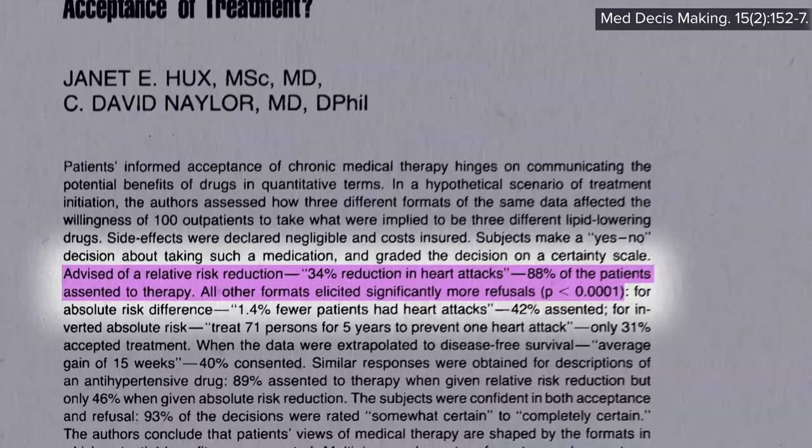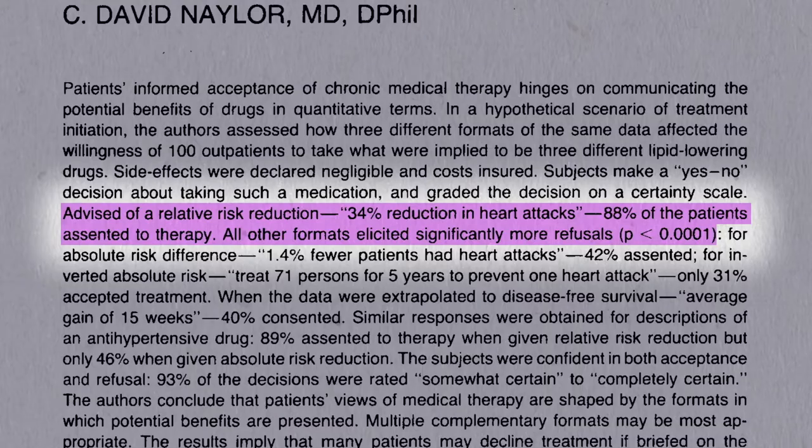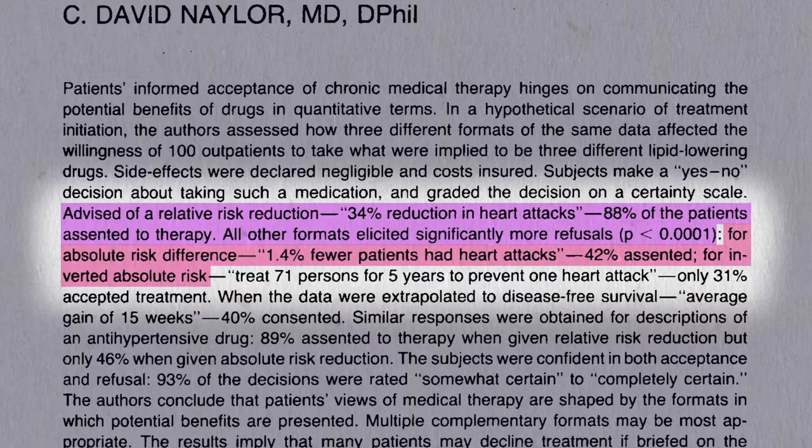If doctors inform patients only about their relative risk reduction — for example, telling patients a pill will cut the risk of heart attacks by 34% — 9 out of 10 agree to take it. Give them the same information framed as absolute risk reduction, though — 1.4% fewer patients had heart attacks — and those agreeing to take the drug drops to only 4 out of 10. Use the numbers needed to treat, and only 3 in 10 patients would agree to take it.